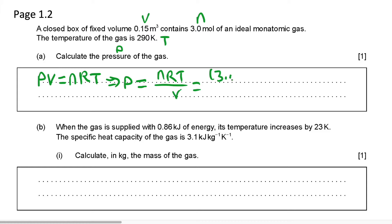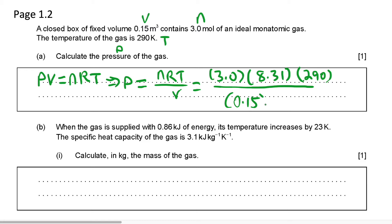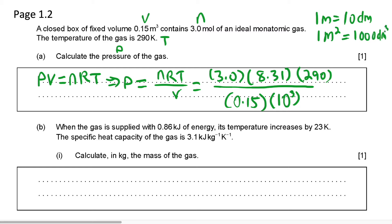So moles is 3.0, R constant is equal to 8.31, temperature is equal to 290, divided by volume which is equal to 0.15 cubic meters. For the ideal gas equation, you need to convert the unit of volume into cubic decimeters, so multiply by 10 to the third power. This is because 1 meter is equal to 10 decimeters, so 1 cubic meter is equal to 1,000 cubic decimeters. This gives us an answer of 48 kPa.